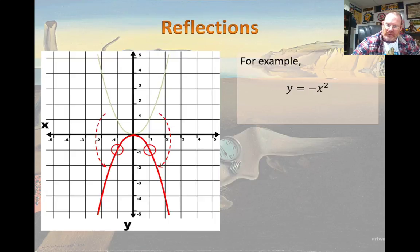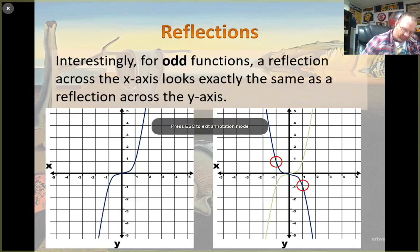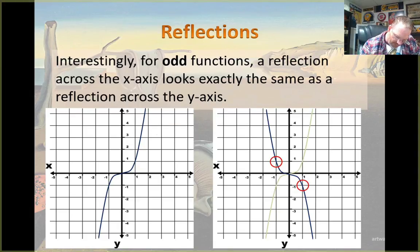Interestingly for odd functions, a reflection across the x-axis looks exactly the same as a reflection across the y-axis. So on the left-hand graph there, you see a standard x cubed graph. When I take and put a negative in front of it, it flips it across the y-axis, so that, I'm sorry, across the x-axis.